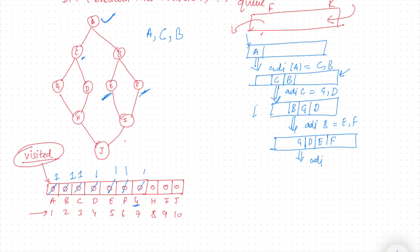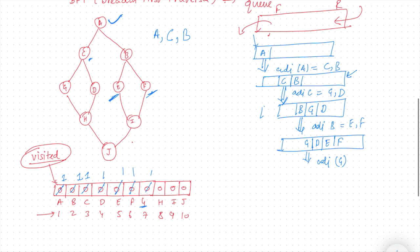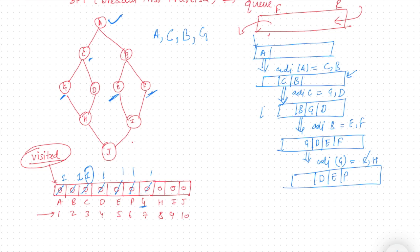Now I will pop out G and check the adjacent of G. The adjacent of G are C and H. In the visited array, C is already visited so it won't go into the queue. H has not been visited, so I mark it as one and add H to the queue.